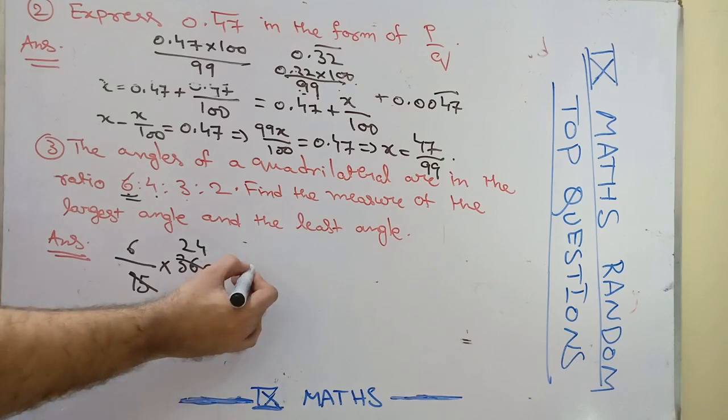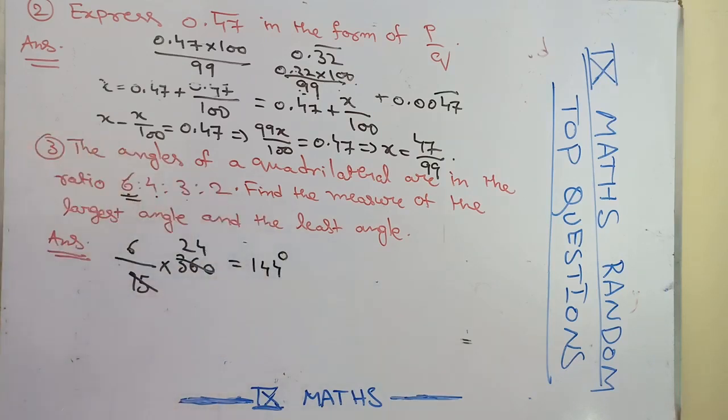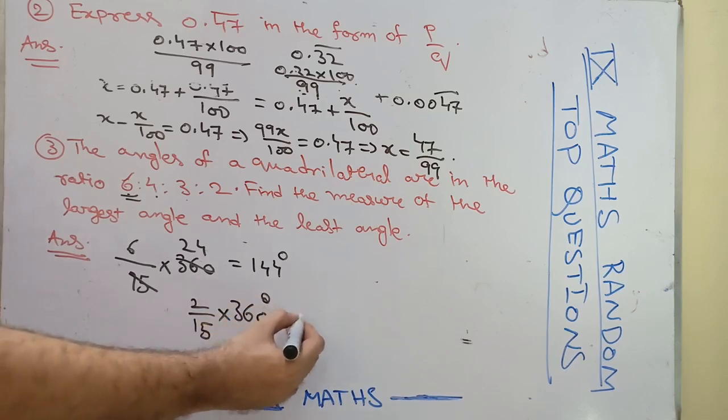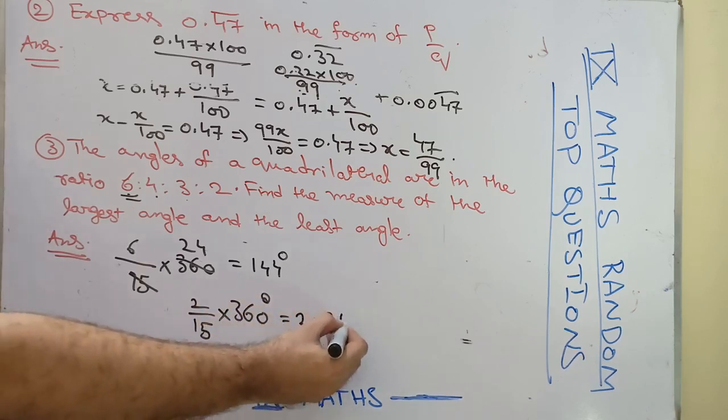6 times 24 happens to be 144 degrees and the least one, that is 2 by 15 times 360 degrees. So 2 times 24 is what we get.